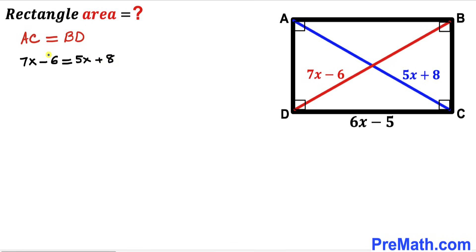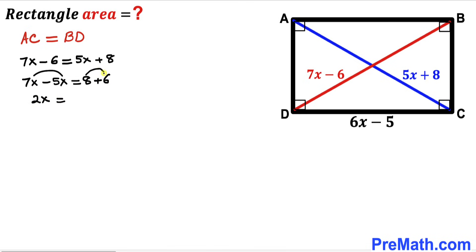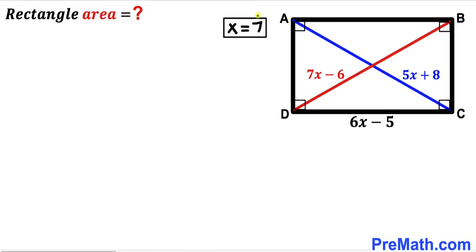Moving the negative 6 to the right and 5x to the left, we get 7x minus 5x equals 8 plus 6. Combining like terms on the left gives us 2x equals 14. Dividing both sides by 2 to isolate x, this gives us x equals positive 7.